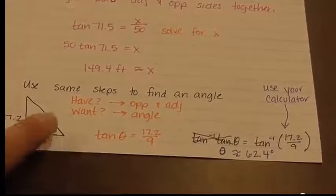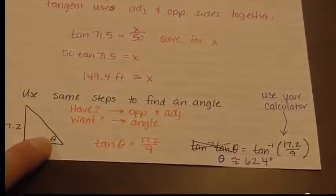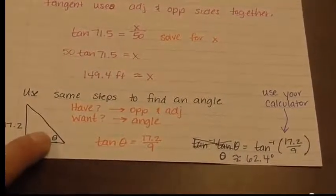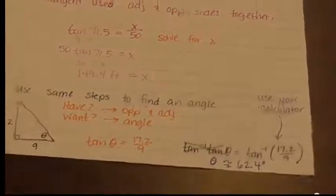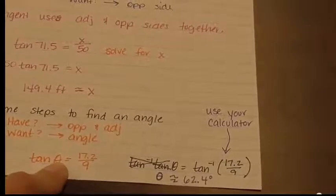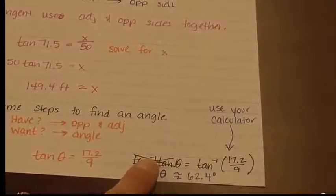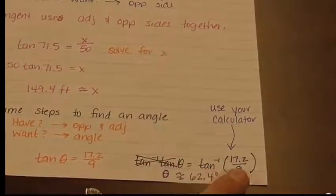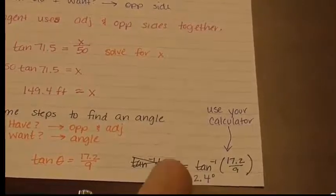Use the same steps to find a missing angle. You're given two sides but missing the angle, represented by the Greek letter theta — theta is like x, but for angles. If you're given the opposite side of 17.2 and the adjacent side of 9, you use tangent: tangent of theta equals 17.2 over 9. To solve for theta, undo tangent using the inverse tangent button — or tangent to the negative 1 power — on your calculator. Apply it to both sides and plug in the fraction 17.2 divided by 9. Your calculator gives theta equals 62.4 degrees.